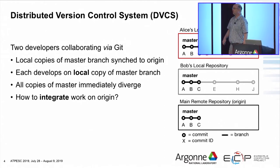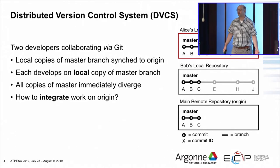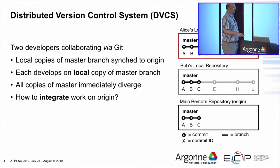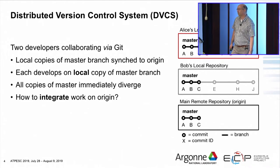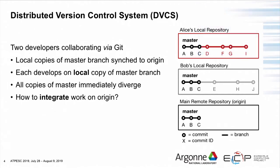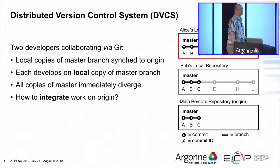We're going to jump in with our first example. There's a new software project just starting with two members, Alice and Bob, collaborating and developing in parallel using Git. Someone's already put some code into a remote repository called Origin in the form of three commits, A, B, and C. Alice connects to that remote repository, issues a clone command, and Git puts a full copy onto her laptop as her own local repository. Bob does the exact same thing from somewhere else in the world, ending up with his own local repository. Now we have three repositories all synchronized with commits A, B, and C.